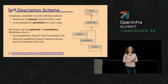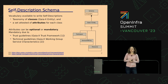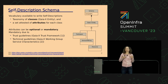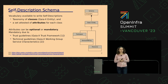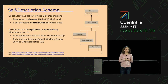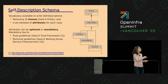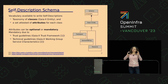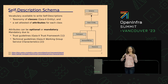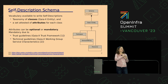A self-description is based on a self-description schema. What is a self-description schema? In a very simplified way, it's the vocabulary you have which is available to write the descriptions. And it consists of two elements: a taxonomy of classes, as you can see here. You have a top-level class which is a GaiaX entity, and there are three base sub-classes: a participant, a service offering, and a resource.